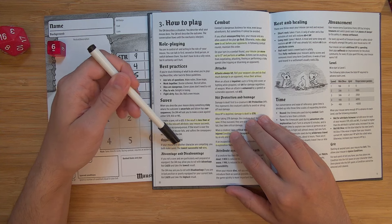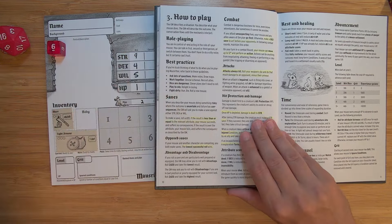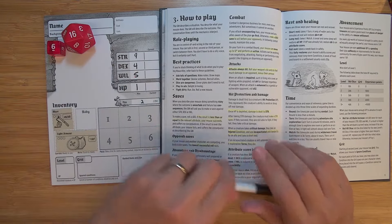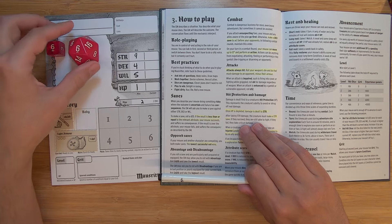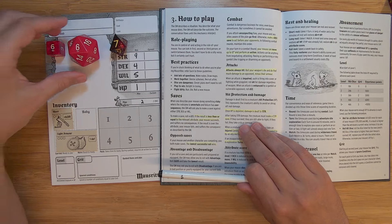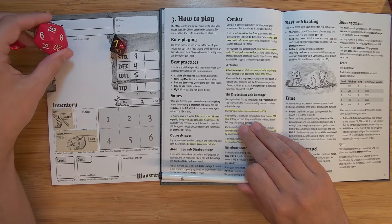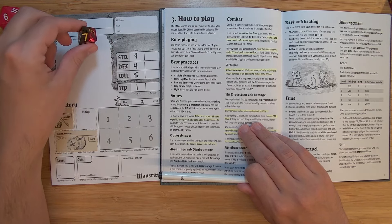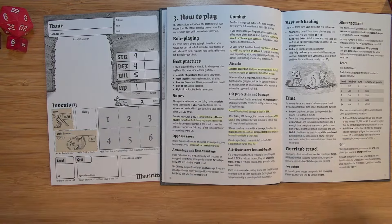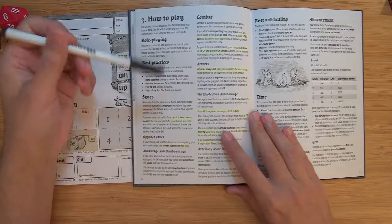Opposed saves. If your mouse and another character are competing, you both make saves. The lowest successful roll wins. So if I'm fighting another mouse, and their strength is 5, and then they roll a 6, but I roll a 7. It's not a d20, but just go with me. So if they roll a 6, and I roll a 7, so they've rolled less, but they have rolled above their strength stat. So they'll still fail. So mine is the highest or the lowest successful result, which is a really clean way to do it. Really, really clean way to do it. I love how that works. Advantage to disadvantage, you're used to that.